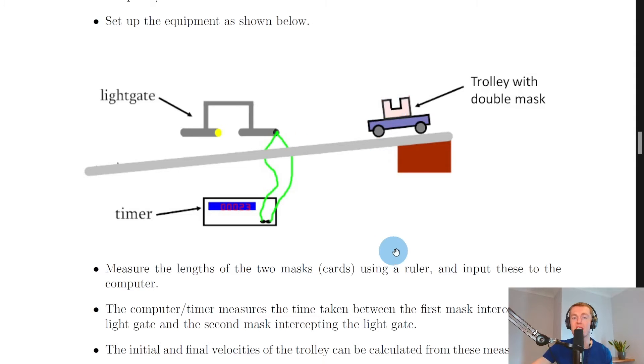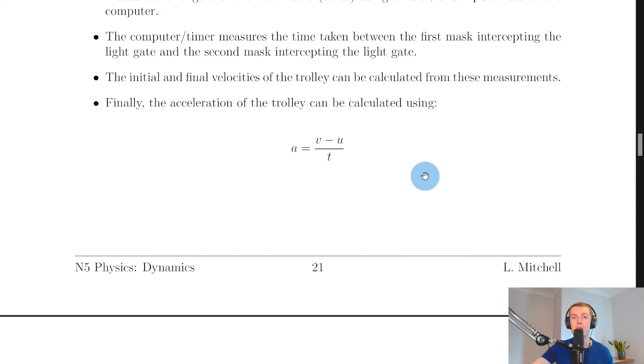Then the final velocity v again will be found from a speed distance time calculation. So you could do v is equal to the length of the second mask or card divided by the time taken for that mask to cut the light gate. And so from the TSA timer you should now have the values to plug into this equation to calculate the acceleration: a equals v minus u over t.